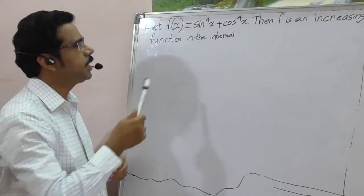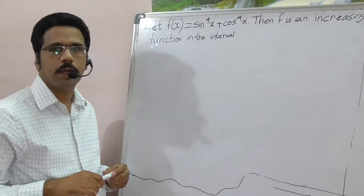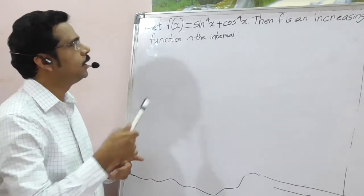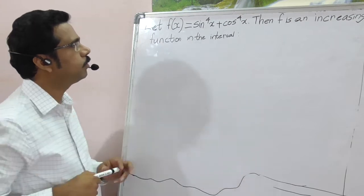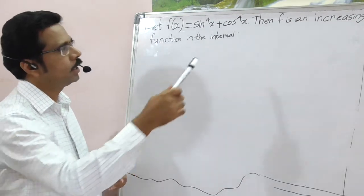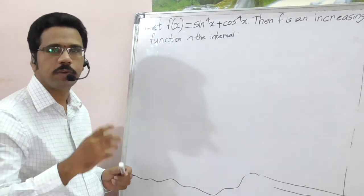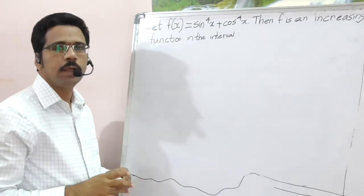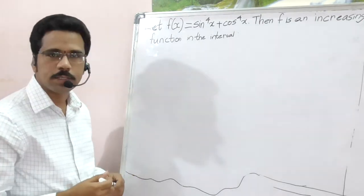Hi, this question from JEE Main online exam, which was conducted on April 10, 2016. f(x) equals sin⁴x plus cos⁴x, clearly given that it is an increasing function. Here we have to calculate in which interval it is increasing, right?